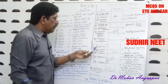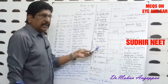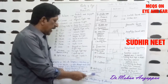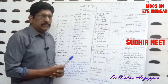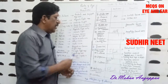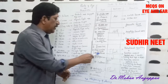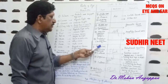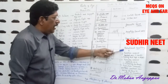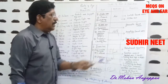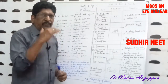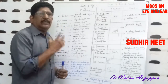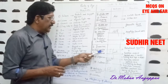Coming to the inner ear, it has three parts: semi-circular canals, vestibules, and cochlea. There are three semi-circular canals. They are for rotational equilibrium — they are for balancing the body. The three canals are: lateral, superior, and posterior semi-circular canals.